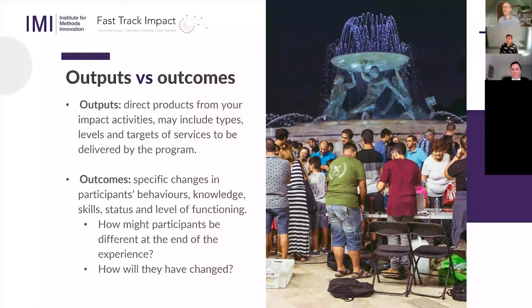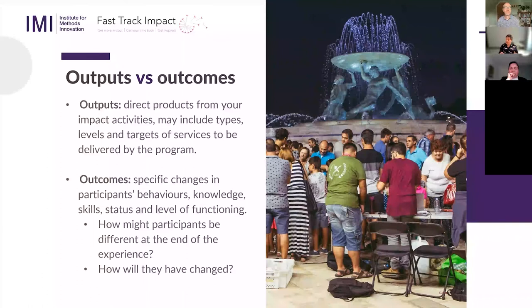There is a key distinction that connects to the logic model tool, which is the distinction between outputs and outcomes. Outputs are the things you're actually doing in your impact activities — you can objectively describe what you've done, who you did it with, what kind of activity it was. That should not be mixed together with outcomes, which is the difference you've actually made: how are people different, how is their thinking different, how is an institution different, what has actually changed? This is a crucial starting point for evaluation because we target the outcome side most often.